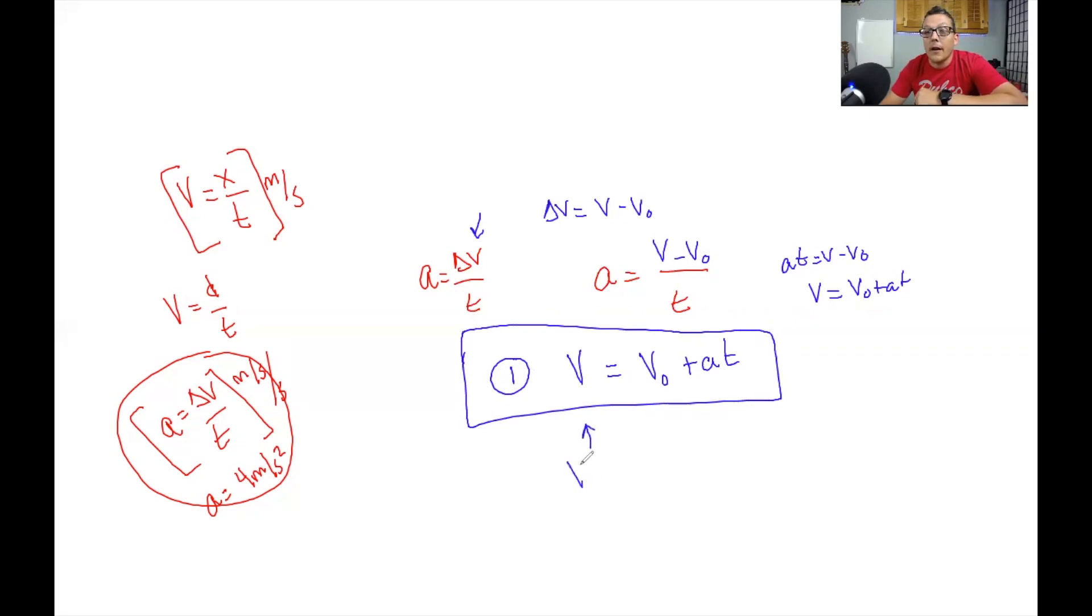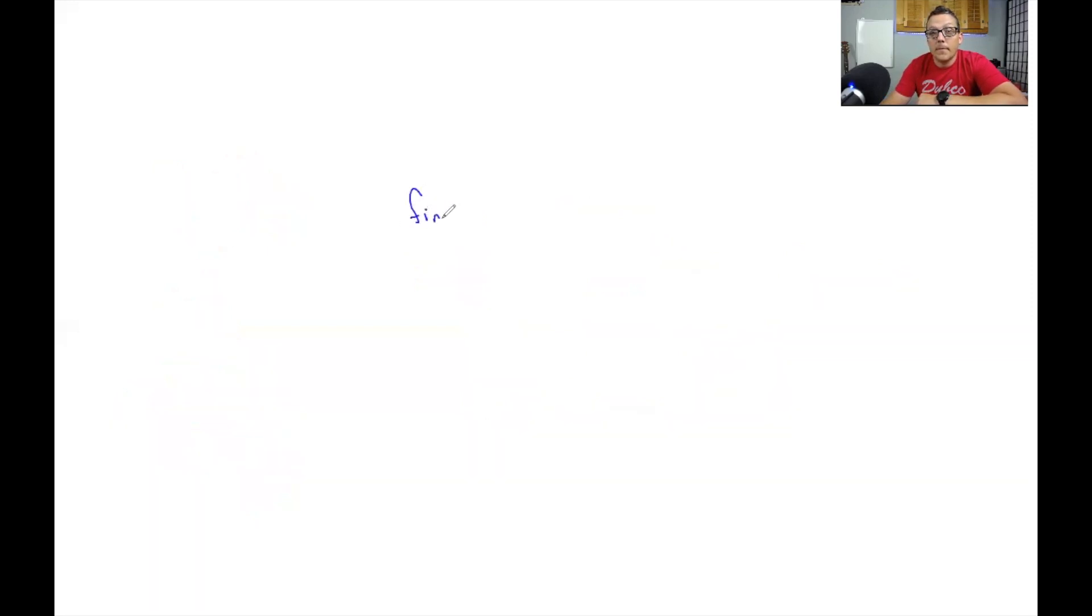So this is kind of how we're going to find V final. Now, if we want to find displacement, we can look back at one of those simple formulas where displacement is some sort of change in X over T. But this change in X over T, this can be written out as average V again.